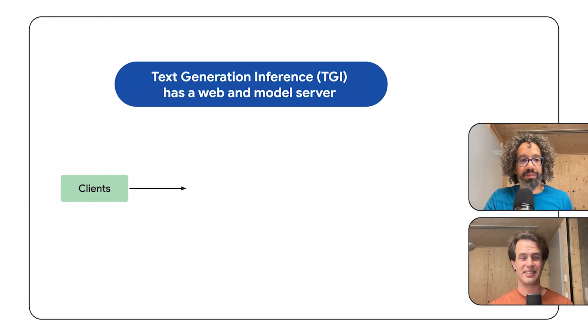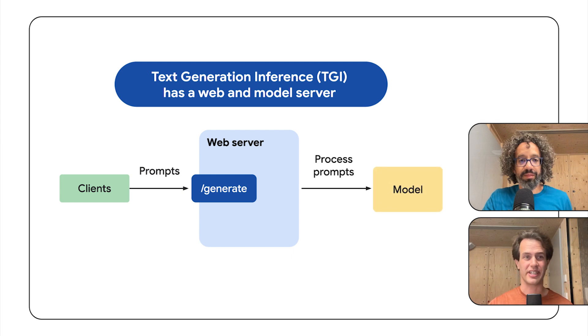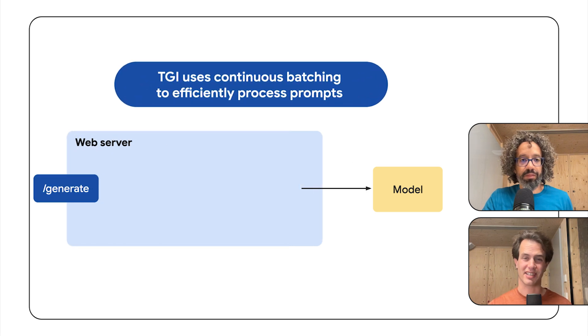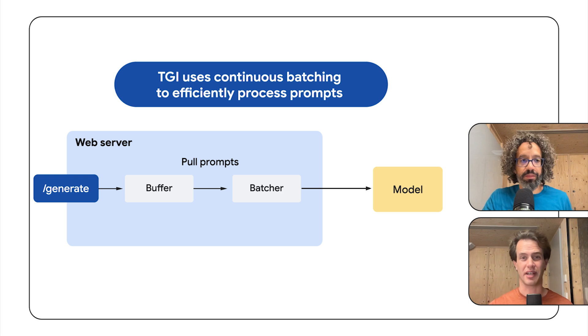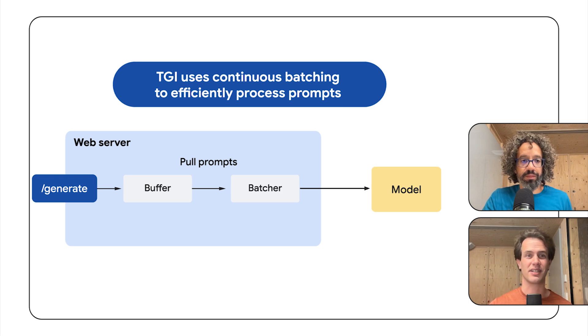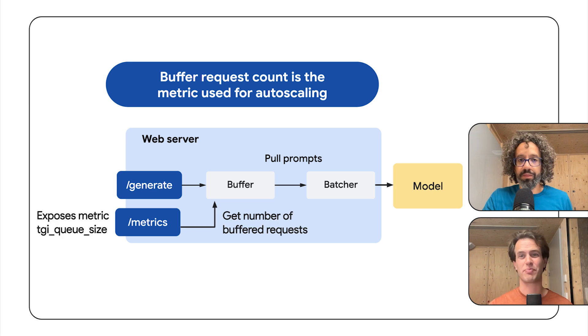Let's dive into the TGI architecture to understand why. Here's a TGI server. Clients send prompts to the generate endpoint and they are processed using the model. To serve those prompts efficiently, TGI uses continuous batching — incoming prompts are first put into a buffer, and the batcher component pulls prompts from that buffer continuously for processing. The number of requests in the buffer is exposed as a metric, and that's the one used for autoscaling. It's a great metric because you add pods when the buffer size starts to grow, and it's generally safe to remove pods when the buffers are consistently empty.